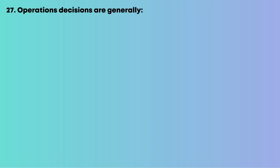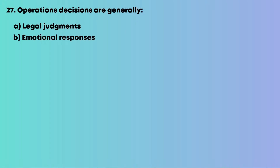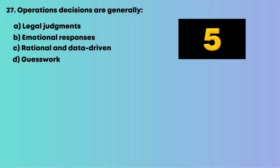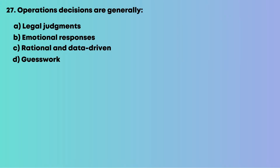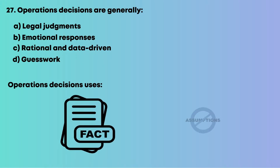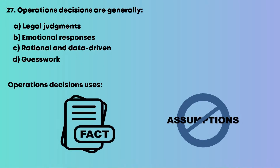Question 27: Operations decisions are generally: A, illegal judgments; B, emotional responses; C, rational and data-driven; D, guesswork. Operations decisions use facts, not assumptions. The right answer is C, rational and data-driven.